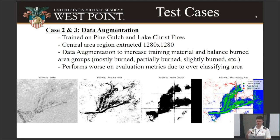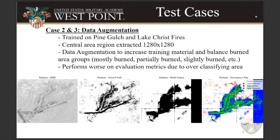Next is data augmentation — now trained on two fires, Pine Gulch and Lake Christine. We cropped center patches because when taking a large area of a fire, there's a lot of unburned area, especially in square regions, and the model was getting too many reps seeing those unburned tiles. We cropped those out and applied augmentation to increase the number of tiles. The model output now overestimates — still following the general shape, but over-predicting burned area given the original file.